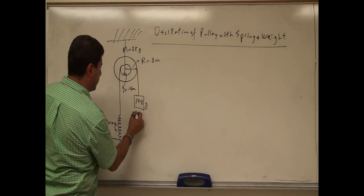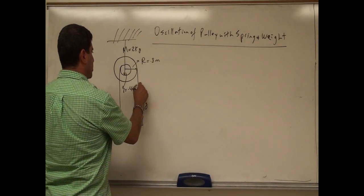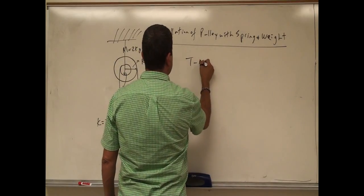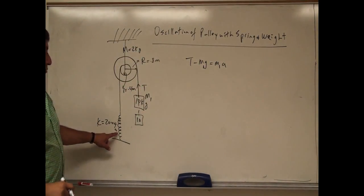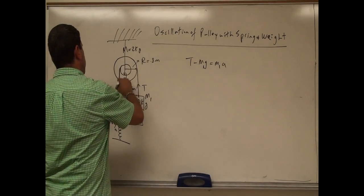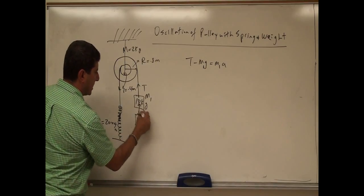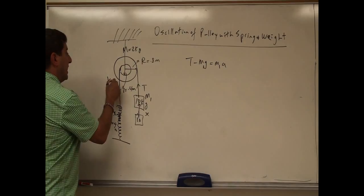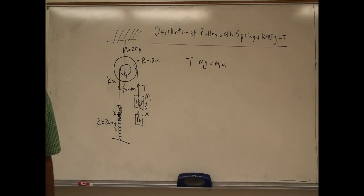What we have to do is displace the system from equilibrium and write the equations of motion. There is tension T acting on the weight, causing it to accelerate upward, so we write T minus mg equals M1 times a, where M1 is the mass of the hanging weight. The spring has no weight so there are no force equations on the spring itself. When the weight goes down by distance x, the spring stretches by x and exerts a force kx — that's Hooke's Law. The tension in the string is due to the spring pulling with force kx.